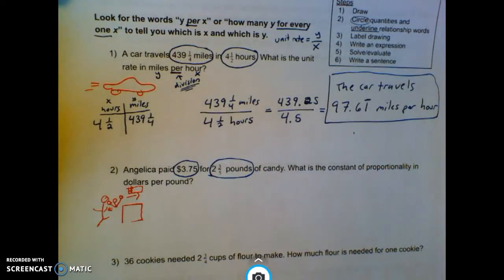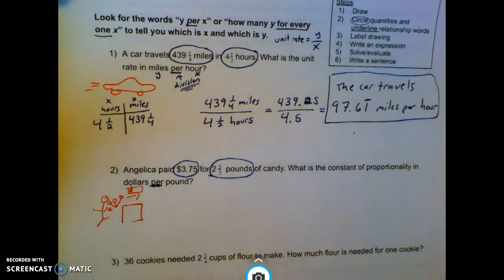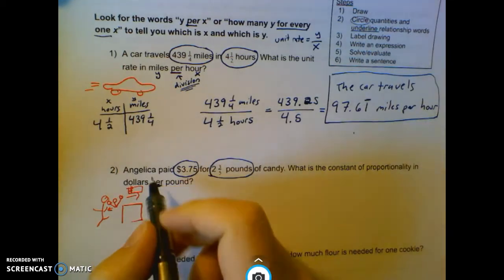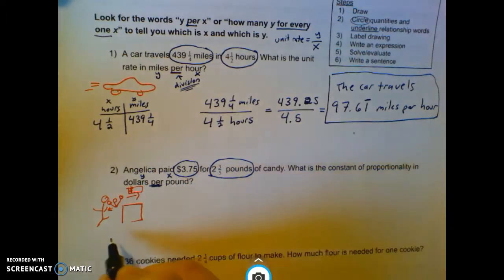We want to know what is the constant of proportionality in dollars per pound. So even if I don't remember what constant proportionality is, this dollars per pound should cue me in. This is Y. This is X. So when I label this, here's dollars. Here's pounds.